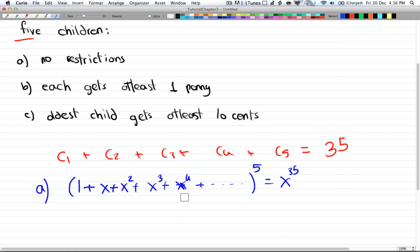So each child can either get 0 pennies, 1, 2, 3, 4, and you can write it all the way up to 35, but since there is no upper limit, then it's okay to just leave it in this form here.